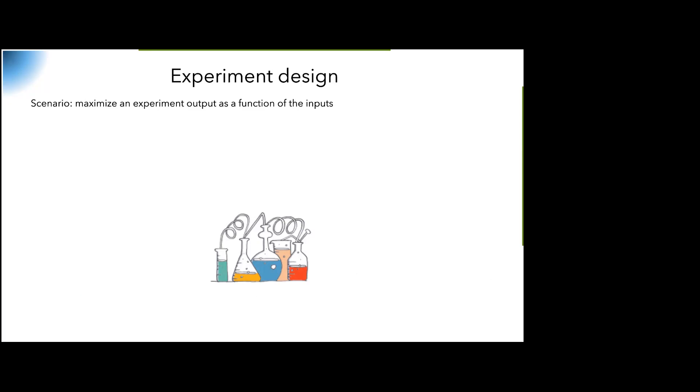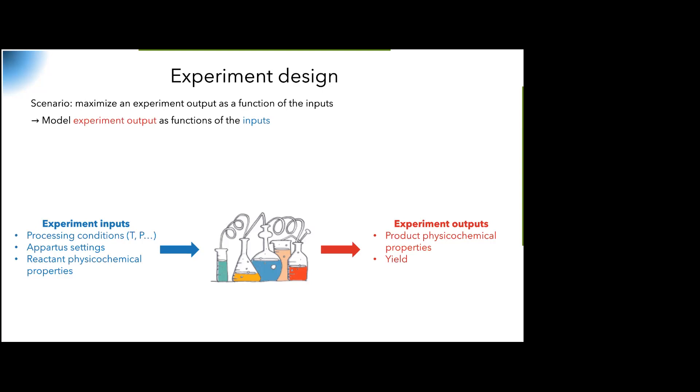Let's start by imagining a very general scenario where you want to maximize the output from an experiment as a function of the input. What do I mean by inputs and outputs? The inputs can be anything - processing conditions, settings of your apparatus, physical or chemical properties of your reactants. Outputs is anything you measure: yield of some chemical you've synthesized, properties of the products.